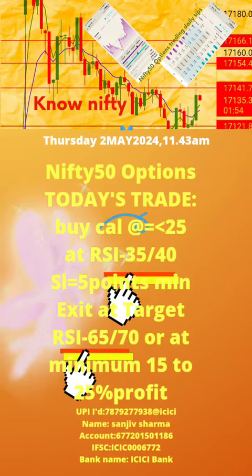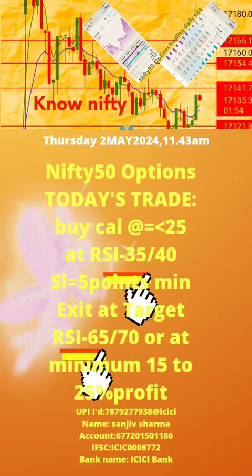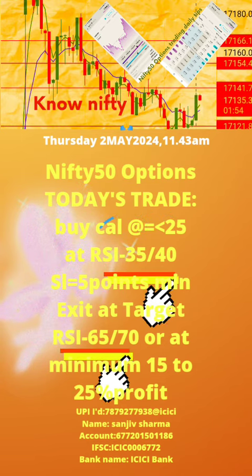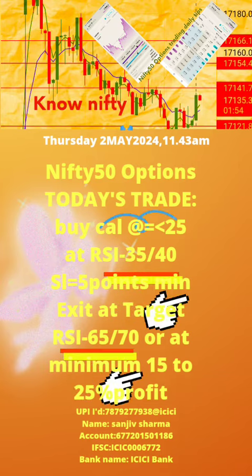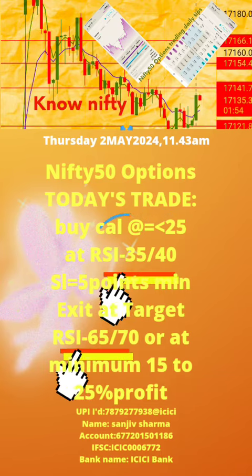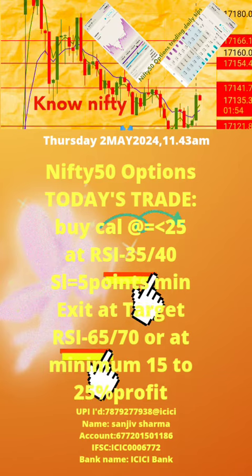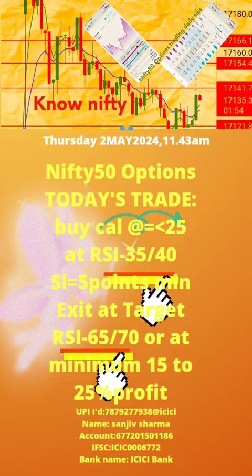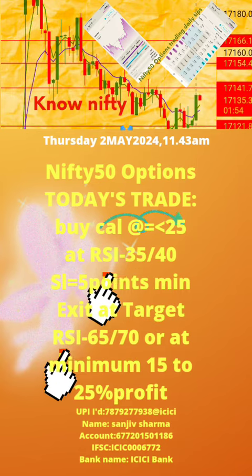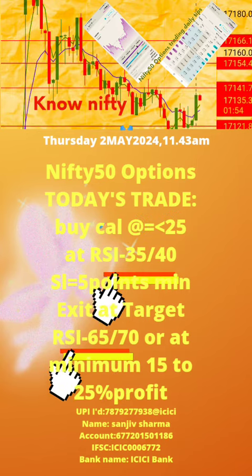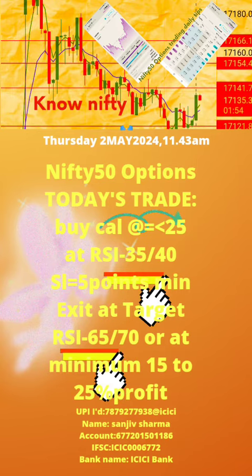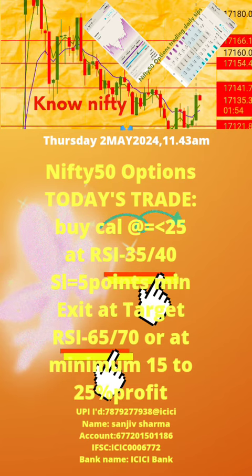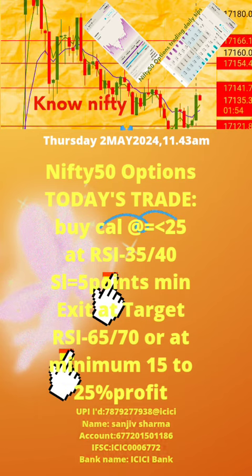Please note: 1. Today's time of post is also mentioned. 2. Buy put or call off strike price with premium value equal to or less than 25 at RSI value, updated daily. 3. Apply stop loss of minimum 5 points. 4. Exit at target RSI value, updated daily. Now take today's trade as per the updates in this page.